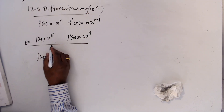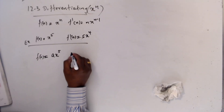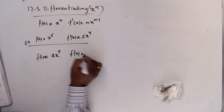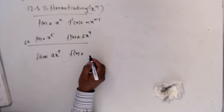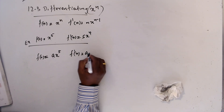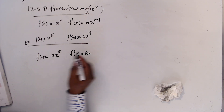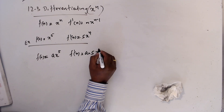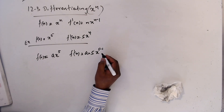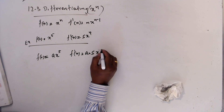Now, what if you have a number in front of it? Assume f(x) = a·xʸ. What is f'(x)? Don't worry about the a — just leave a as it is. The answer is a·y·xʸ⁻¹, and y minus 1 gives 5 minus 1 which is 4.